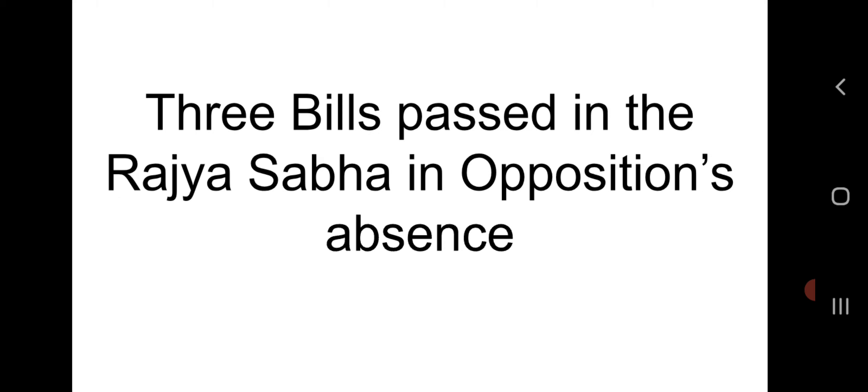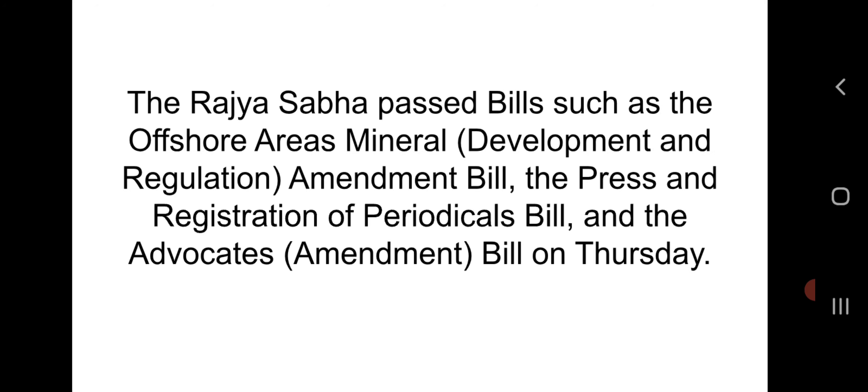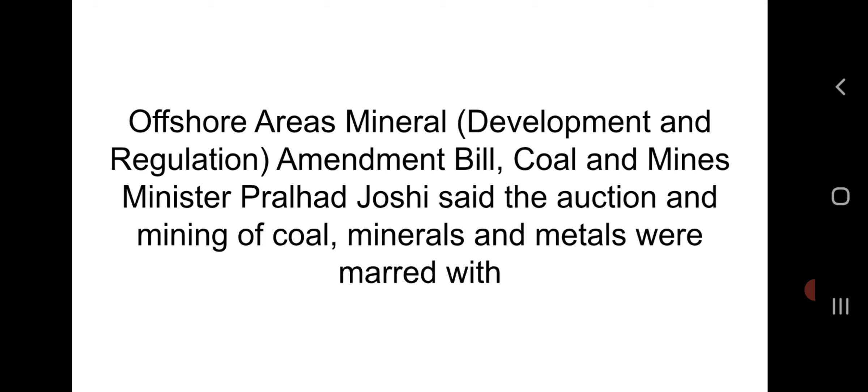Third related topic: three bills passed in Rajya Sabha in opposition's absence. The Rajya Sabha passed bills including the Offshore Areas Mineral Development and Regulation Amendment Bill, the Press and Registration of Periodicals Bill, and the Advocates Amendment Bill on Thursday. Coal and Mines Minister Pralhad Joshi said the auction and mining of coal, minerals, and metals were marred with corruption and scandals under the previous UPA government.